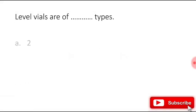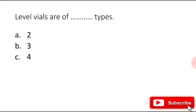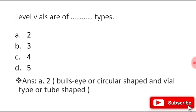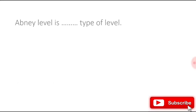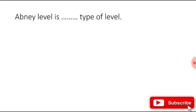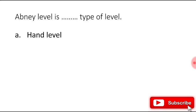Level vials are of how many types: two, three, four, or five? The right answer is two — bull's eye, which is circular shaped, and the bile type or oval-shaped tube.